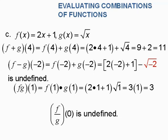Finally, f divided by g of 0 is undefined. f of 0 divided by g of 0 would be 2 times 0 plus 1 over the square root of 0, which gives us 0 in the denominator — undefined. So that's just another way to look at evaluating functions both graphically and with charts. Professor Bob Young signing off, have a great one.